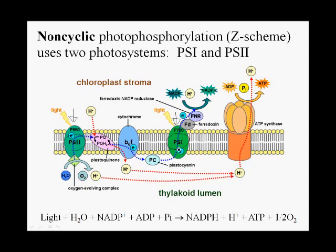Each photosystem is surrounded by light harvesting complexes that are funneling light energy. Looking at photosystem 2, when its chlorophyll becomes oxidized and loses its electrons, the marvelous thing that cyanobacteria invented is that oxidized photosystem 2 is able to immediately regain electrons by ripping apart a water molecule. In the process, it generates oxygen gas and protons, occurring in the lumen of the thylakoid. The oxygen gas escapes to the atmosphere, but the protons stay in the thylakoid lumen.